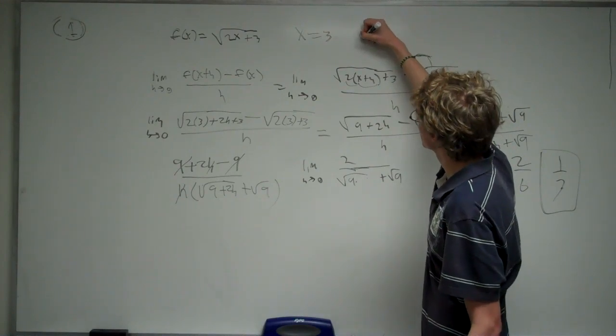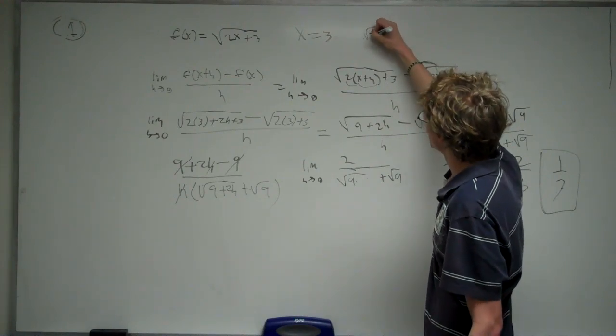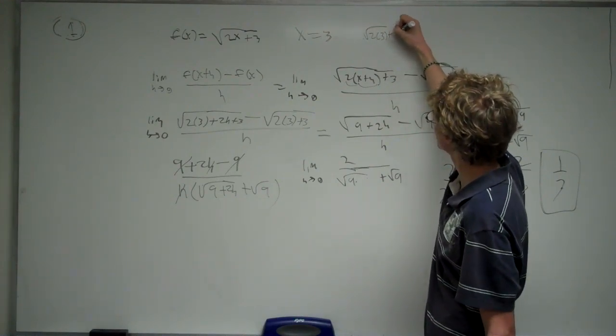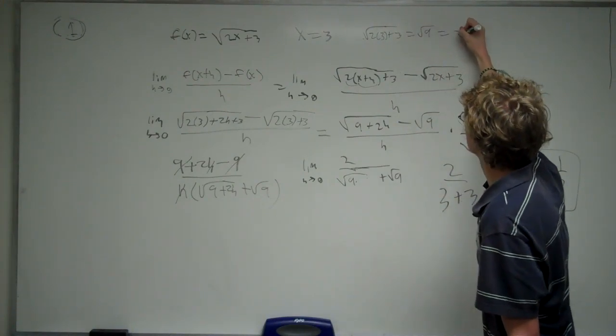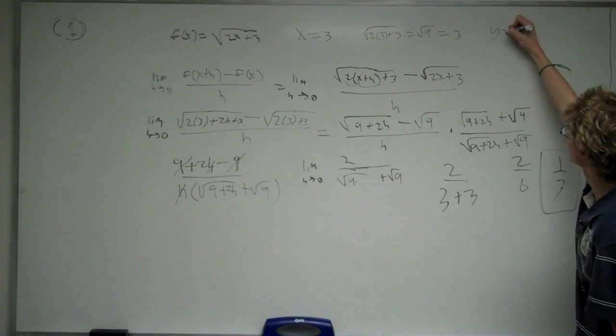And that's going to give us the square root of 2 times 3 plus 3, which equals the square root of 9, which equals 3. So then our y-point is 3.